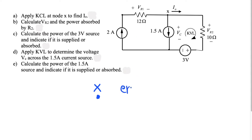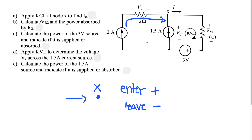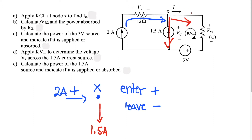Entering is positive and leaving is negative. So at node X, two amps is coming into the node — it's entering node X, so that's plus two amps. We know that 1.5 amps is leaving node X downward, so 1.5 amps is leaving. And i_naught is leaving node X to the right — because if i_naught were entering it would go counterclockwise, but since it's leaving it goes clockwise. So i_naught is our unknown value.